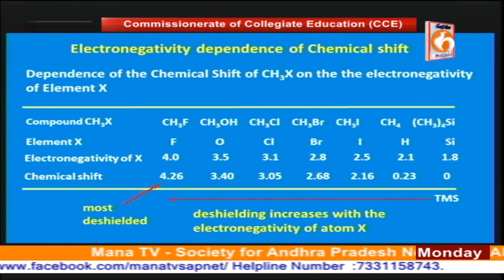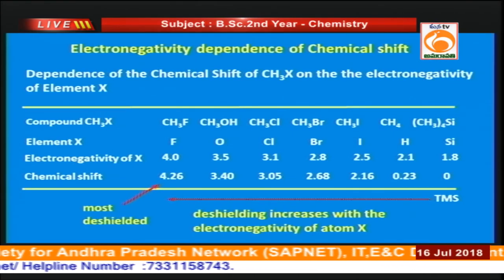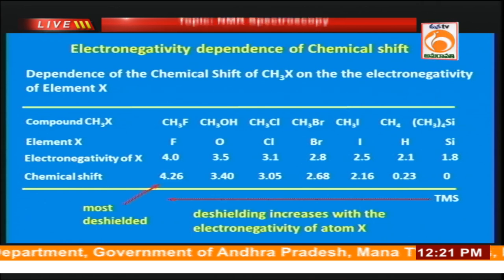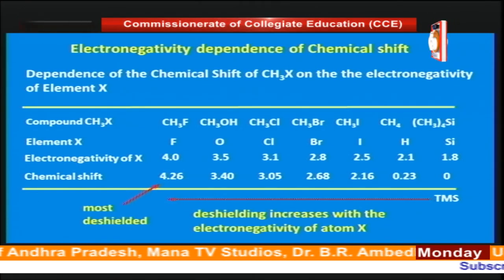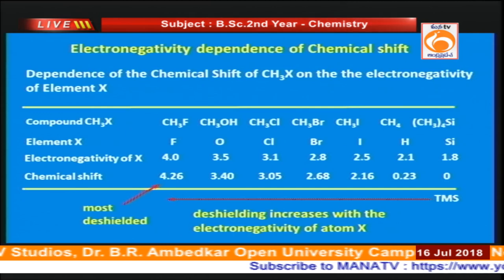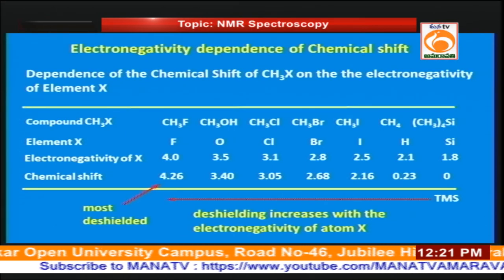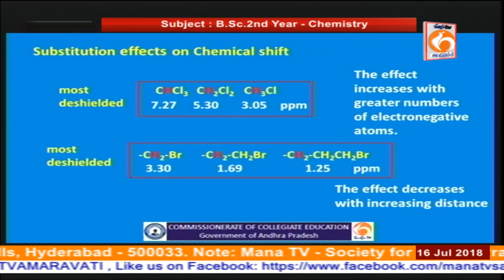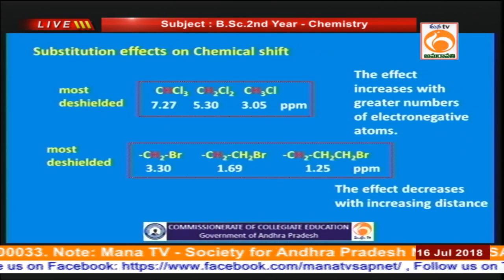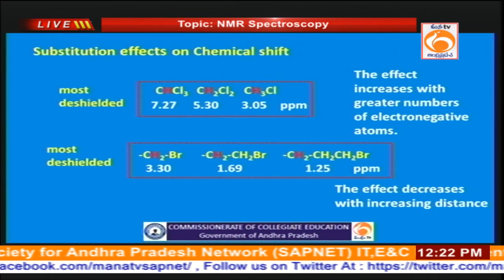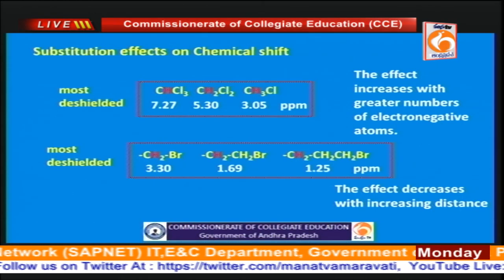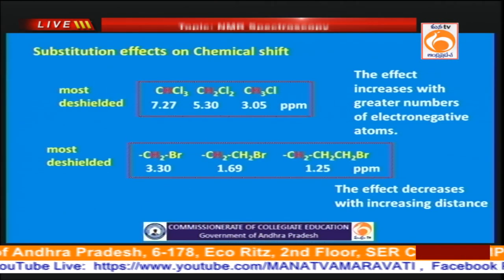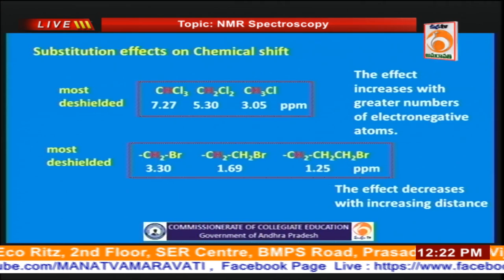As the electronegativity of the element attached to the carbon atom containing the proton increases, the δ value automatically increases, because the electron density of the bonded electrons surrounding the proton decreases. The more the number of electronegative elements, the more the δ value. For example, CCl₃ has a δ value of 7.27 because it contains 3 chlorine atoms, whereas methyl chloride CH₃Cl contains only 1 chlorine atom, so its δ value is only 3.05.